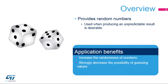The Random Number Generator, or RNG, integrated inside STM32 products provides random numbers which are used when producing an unpredictable result is desirable. Applications can benefit from the RNG to increase the randomness of numbers or to decrease the possibility of guessing certain values.